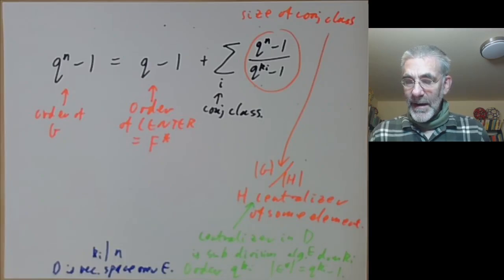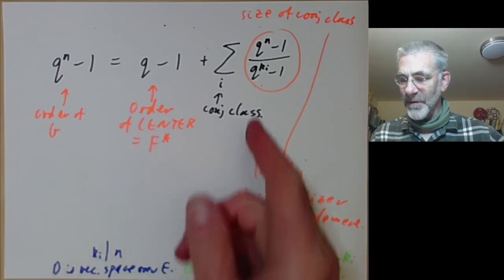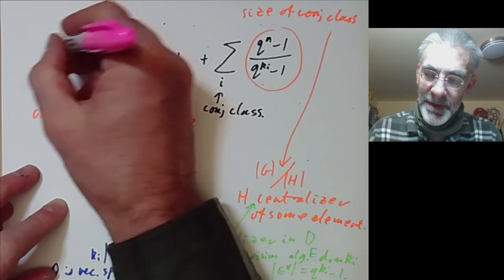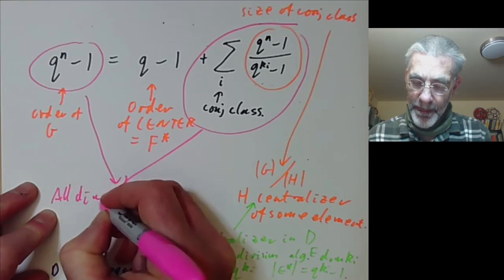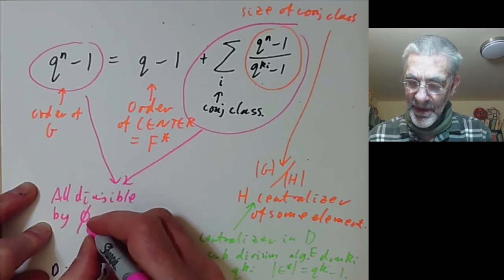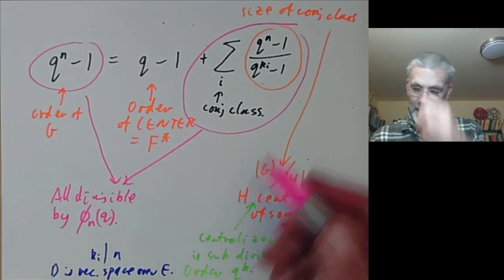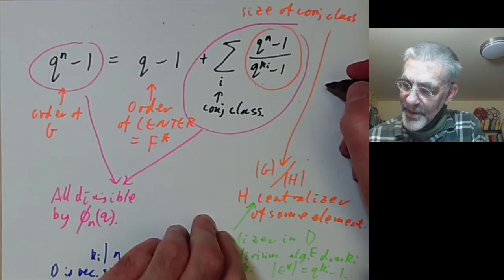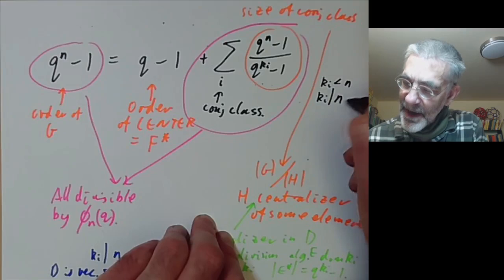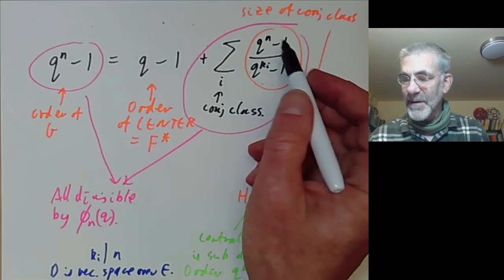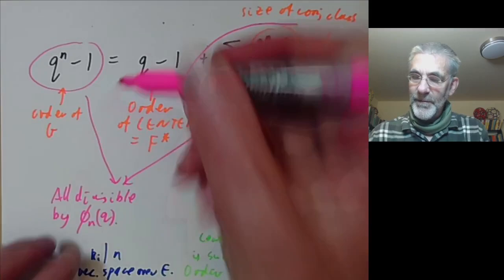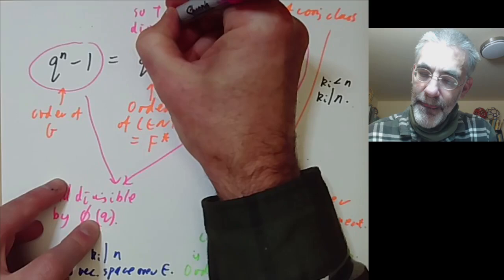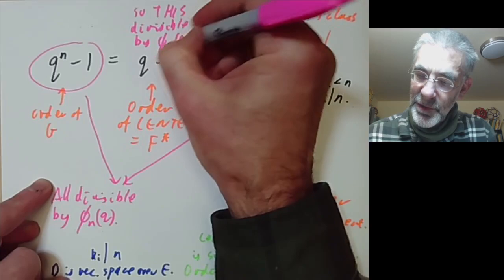So, now we want to obtain a contradiction from this. Or at least we want to prove that n is equal to 1. And what we do, the key point, is we look at these terms here. And we notice they're all divisible by the cyclotomic polynomial phi n applied to q. So here we're using the fact that ki is less than n and ki divides n, which implies that this term here contains q minus zeta for any primitive nth root zeta. So it's divisible by the cyclotomic polynomial. So this is divisible by phi n of q.